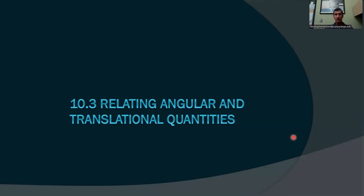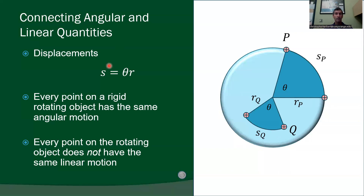We've introduced rotational motion, rotational position, rotational displacement, angular velocity, and angular acceleration. Now we're going to connect these quantities with the translational quantities, which is important for things like rolling wheels, connected body problems with pulleys, and any place where translational and rotational motion are happening at the same time. Let's start by connecting position on a circle or rigid disk to our angular and translational quantities.